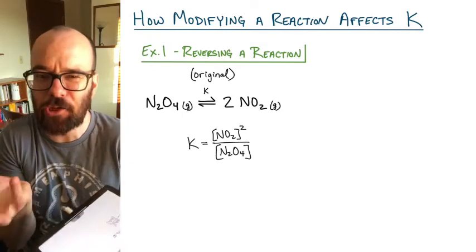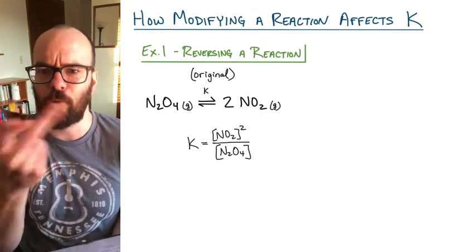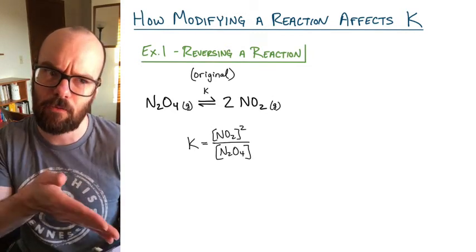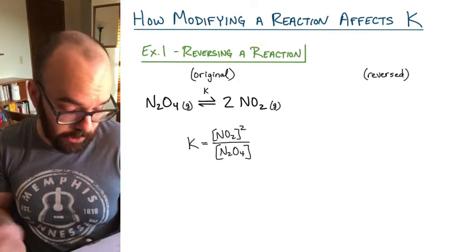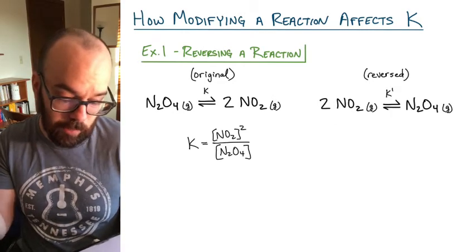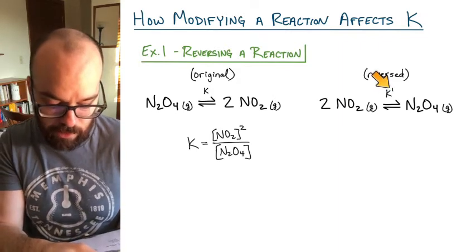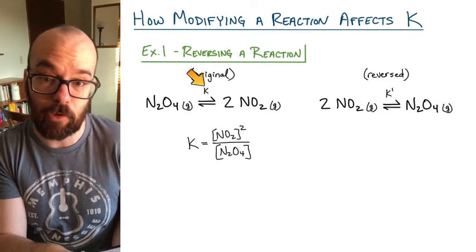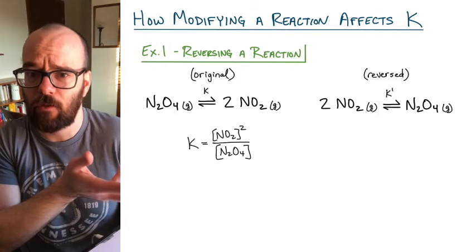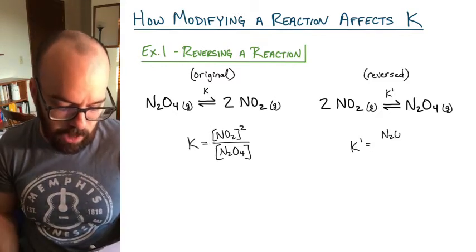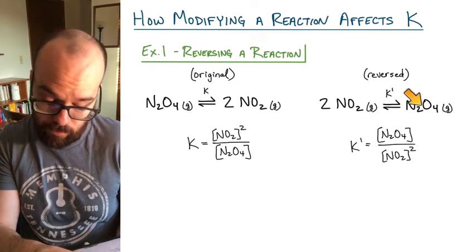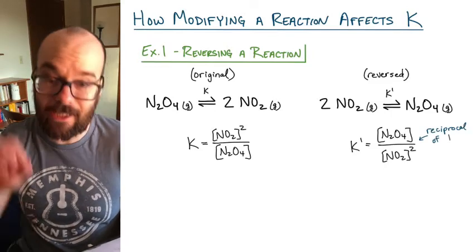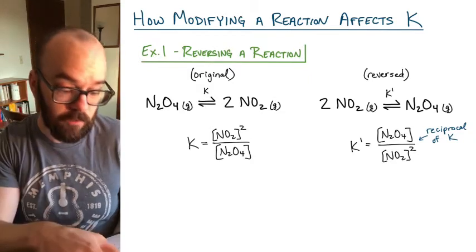Now we're going to reverse this reaction. When we do that, we're not actually changing anything about what's physically happening — it's still the same reaction in equilibrium. But whenever we write it a different way, there's a different K value associated with it, which is a little bit weird to think about. The reverse reaction is two nitrogen dioxide gas in equilibrium with N2O4 gas, and it has a different K value, which I'll write as K prime. Now, K prime equals N2O4 on top divided by NO2 concentration to the power of two. If you take a look at these two expressions, you'll notice that K prime is the reciprocal of the original K expression.